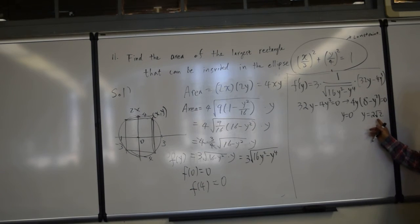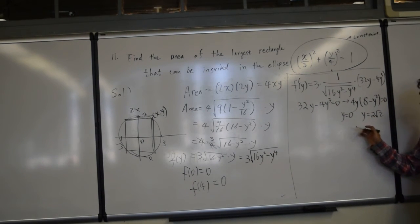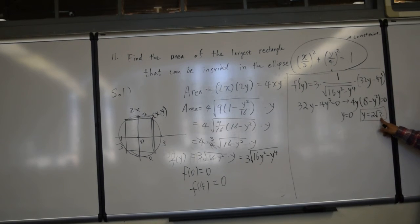Okay, now we've found out that these are the critical numbers, but 0 is a boundary value, so it's not a critical number. This is the only critical number that we have to figure out. So let's plug that in.